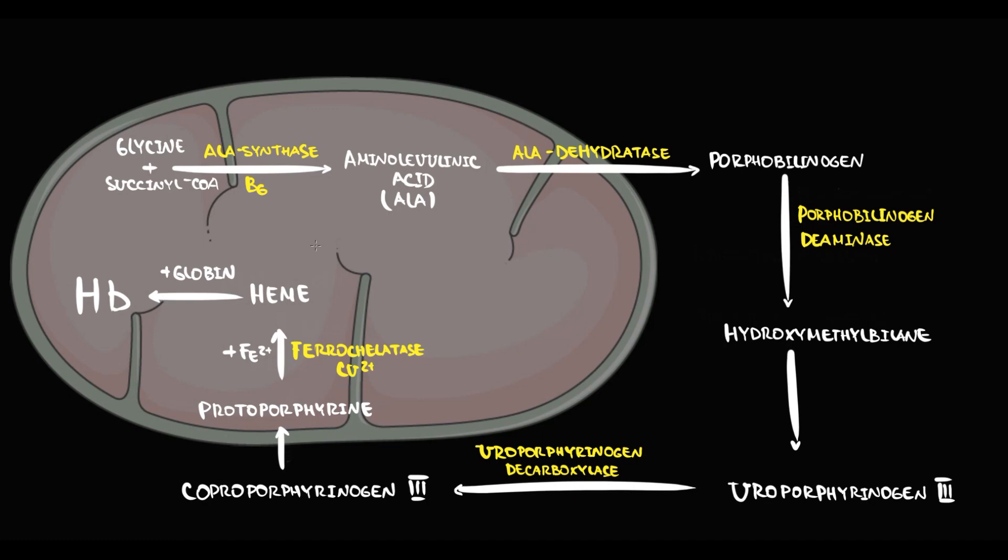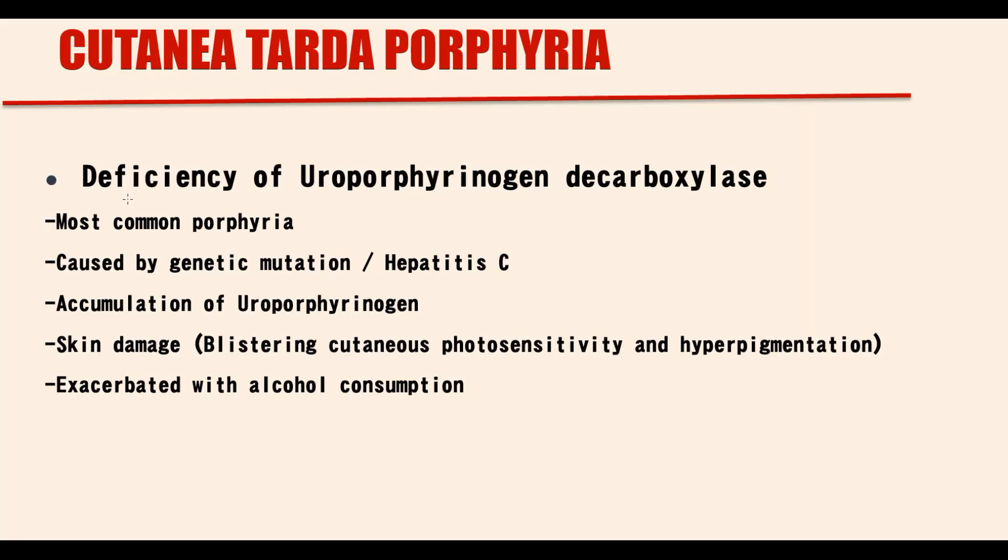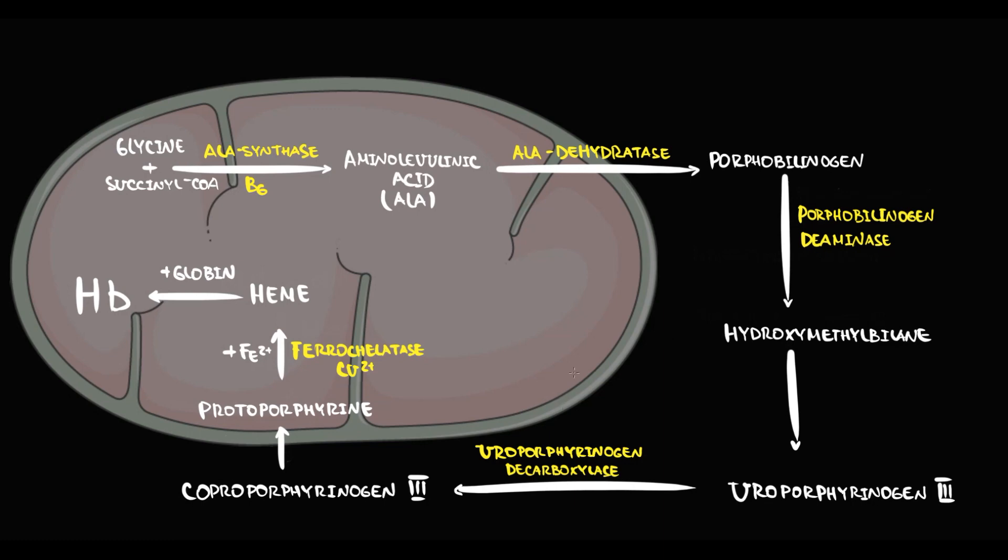And then fully matured blood cells with hemoglobin will enter into the circulation. But some genetic mutations can disrupt this pathway. And one of such genetic mutations causes deficiency of uroporphyrinogen decarboxylase. As a result, a condition known as cutanea tarda porphyria develops. The problem here is that if there will be no uroporphyrinogen decarboxylase, then we cannot produce coproporphyrinogen. But also, this causes accumulation of uroporphyrinogen.